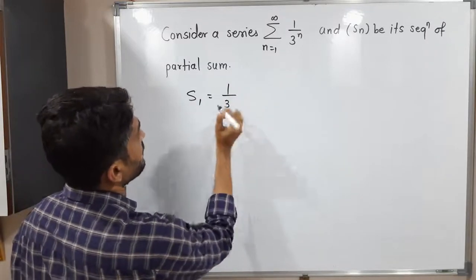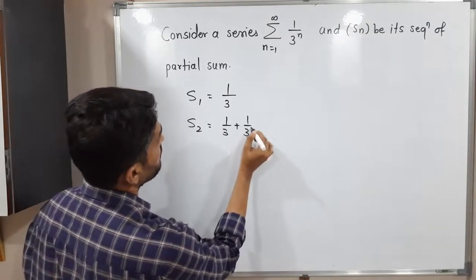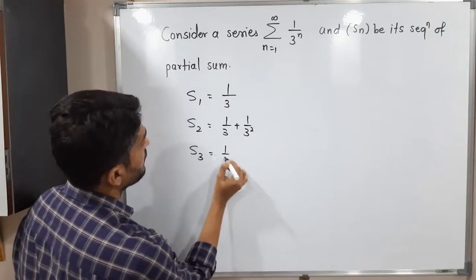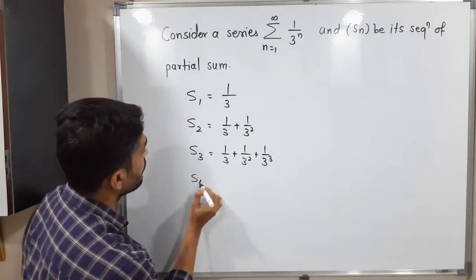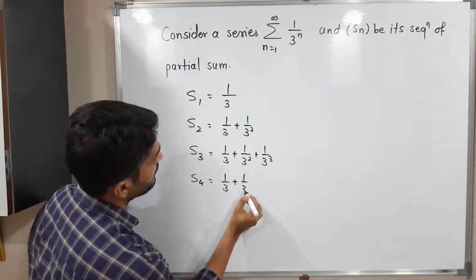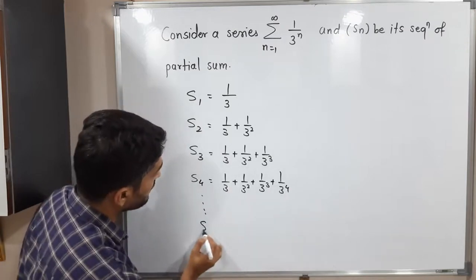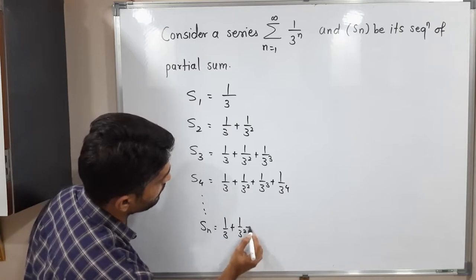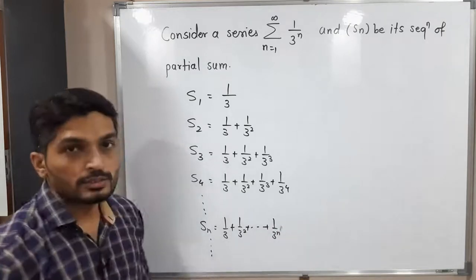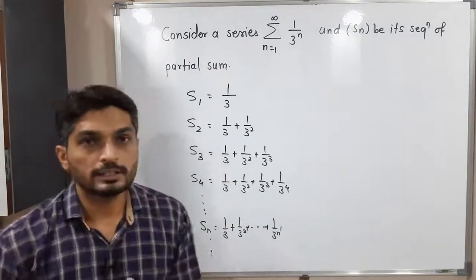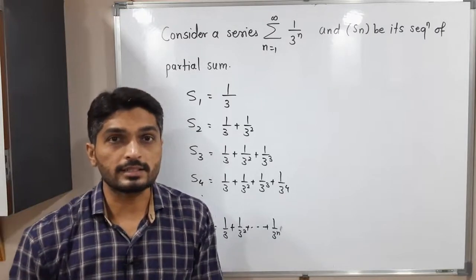Let us find Sn. S1 equals the first term, 1/3. S2 equals the sum of the first two terms: 1/3 plus 1/3 squared. S3 equals 1/3 plus 1/3 squared plus 1/3 cubed. S4 equals 1/3 plus 1/3 squared plus 1/3 cubed plus 1/3 to the 4th. And Sn equals 1/3 plus 1/3 squared plus ... plus 1/3 to the n. This is the sequence of partial sums. Notice it is a geometric series with common ratio 1/3.